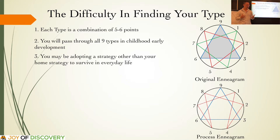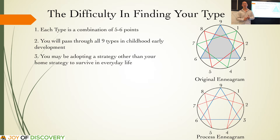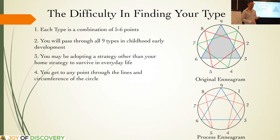A third point is you may be adopting a strategy other than your home strategy to survive in everyday life. So if your core point is 2, you may be operating at 1 or 3 because it's much easier to survive. Because your needs at work, your home situation, or your current environment may necessitate that you function at a point other than your home type. So it is very important to notice the movements that can happen.